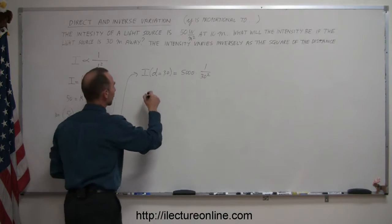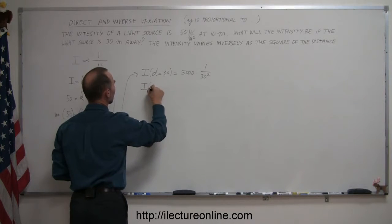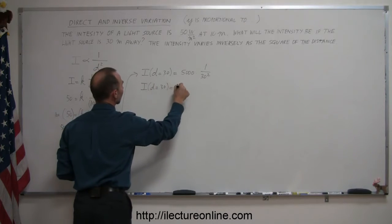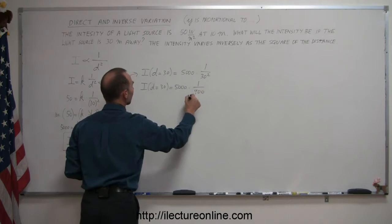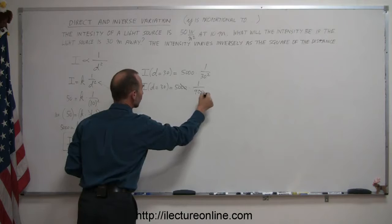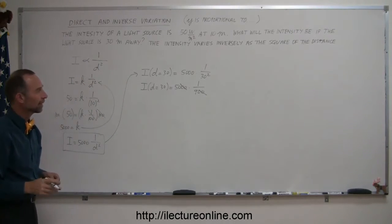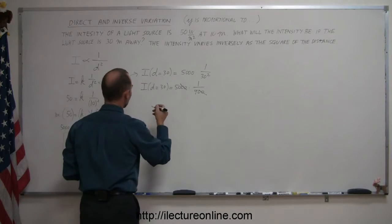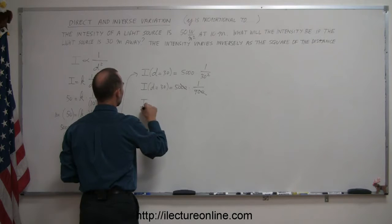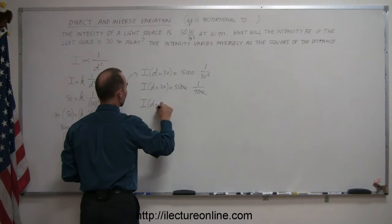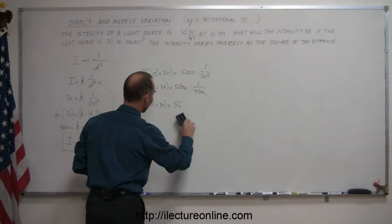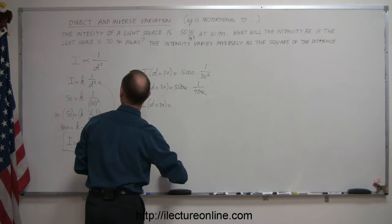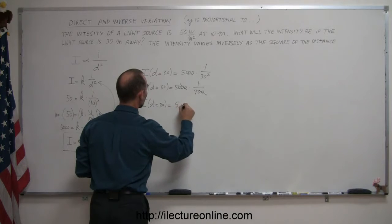And working that out, we have the intensity when the distance is equal to 30, that's equal to 5,000 times 1 over 900. So these two zeros cancel out those two zeros, and 50 divided by 9 is about 55 or 56. So intensity when d is equal to 30 is equal to about 56—oh, not 56 but 5.6, 5.6 watts per square meter.